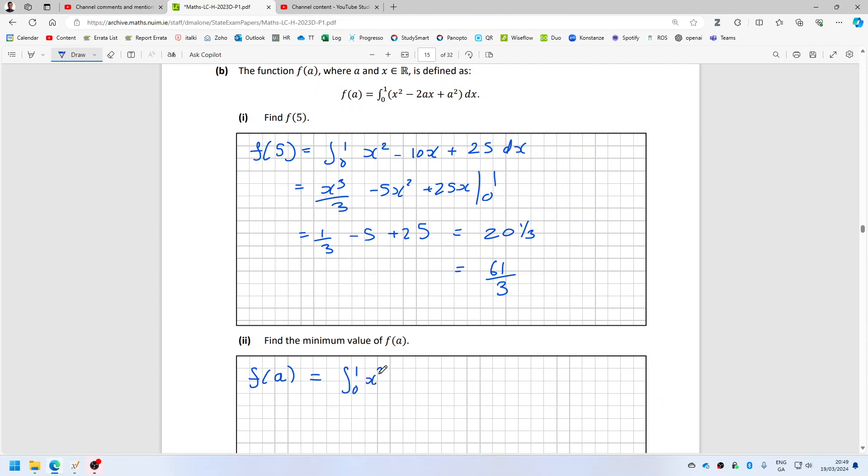Zero to one x squared dx minus the a is treated as a constant here. So actually, the two a can come out and that's zero to one x dx plus a squared zero to one dx.